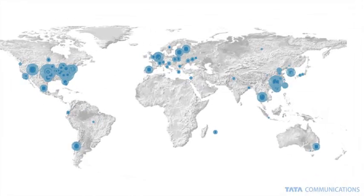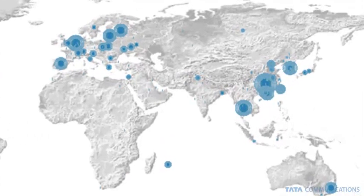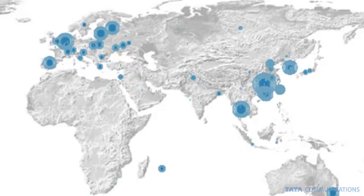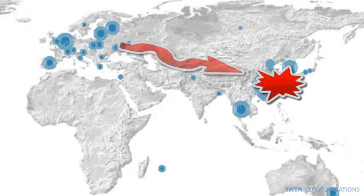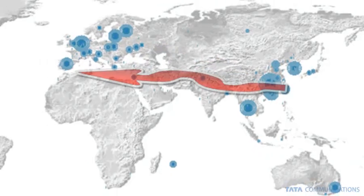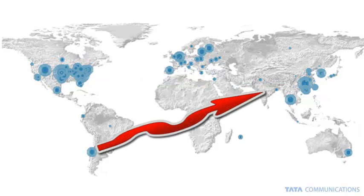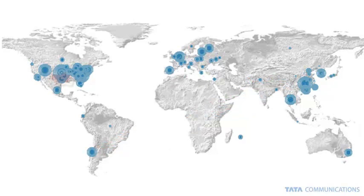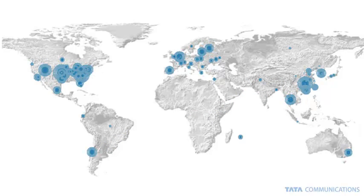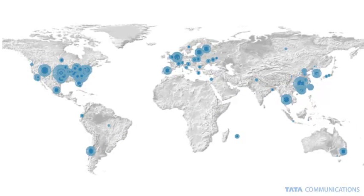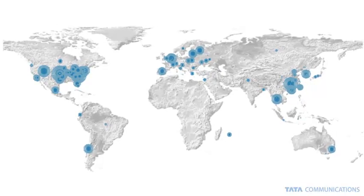Today, DDoS attacks originate and are destined towards most locations globally. We see attacks that originate in Europe and head towards Asia, attacks that originate in Asia attacking North American targets, South American attacks based towards India, as well as in-country and localized attacks within given regions of the world. The best way to manage these types of attacks is using a service provider with a global DDoS footprint.